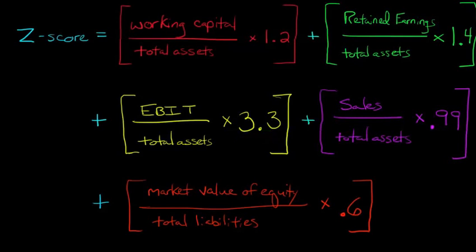And then the fourth part is you take sales, divide it by total assets, and multiply it by 0.99. And then you take the market value of equity, which you're only going to be able to have obviously if this is a publicly traded firm. So you take the market value of the firm's equity, and you divide that by the firm's total liabilities, and multiply it by 0.6.